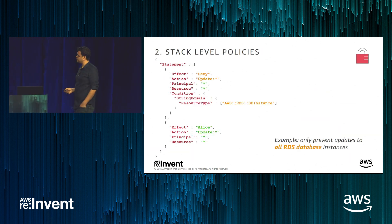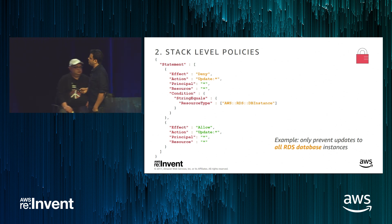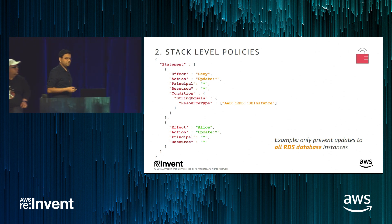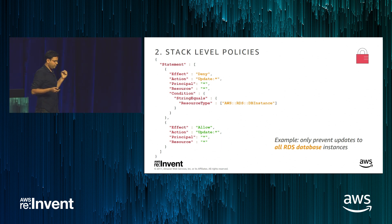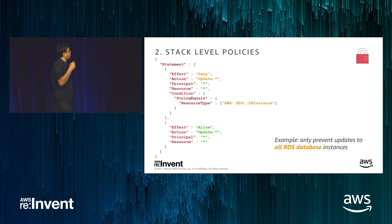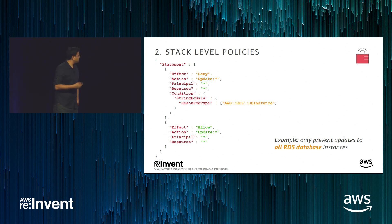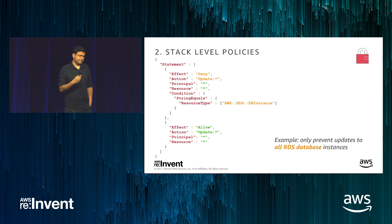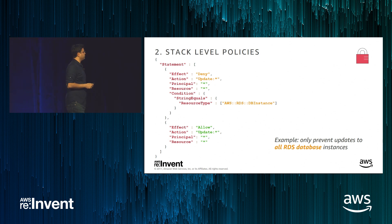Moving to the second guardrail: stack-level policy. Stack policy is a JSON document where you define the controls you want over your resources or stack. For example, a policy can allow updates on all resource types except the RDS DB instance type. You attach the stack policy to the stack when creating or updating it — this is one way to control the update behavior on resources.